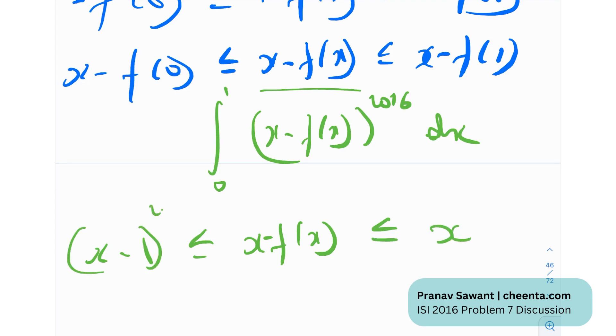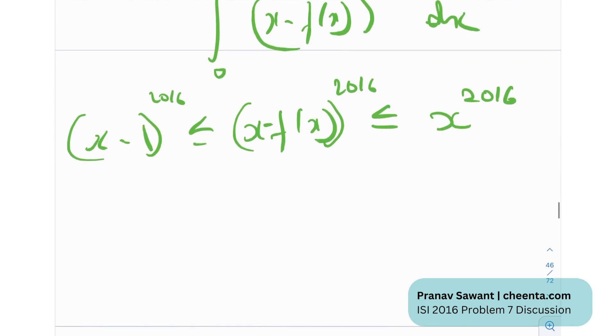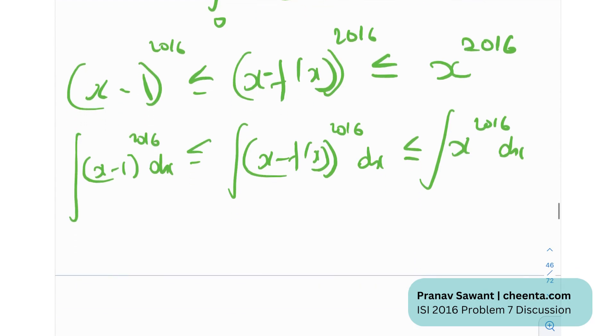If I just raise this to the 2016th power, I'll get this. And after this, we can just take the integral. The integral of (x - f(x))^2016 dx lies between these values: integral from 0 to 1 of (x-1)^2016 dx and integral from 0 to 1 of x^2016 dx. That's perfect.